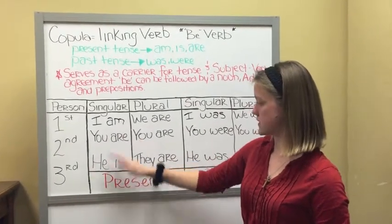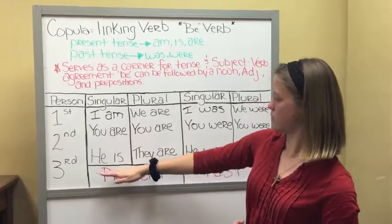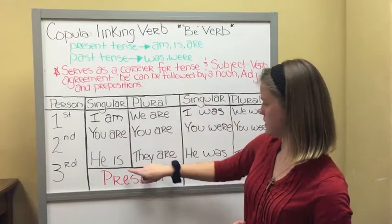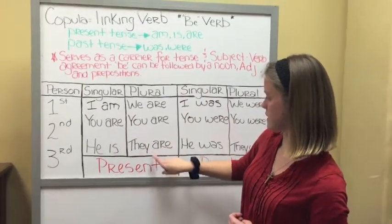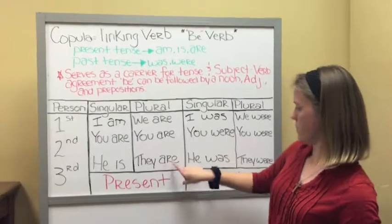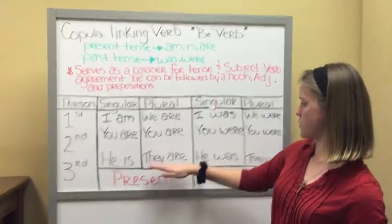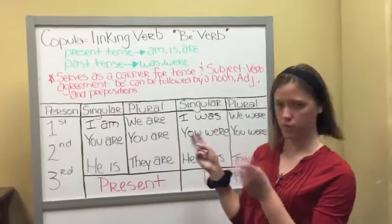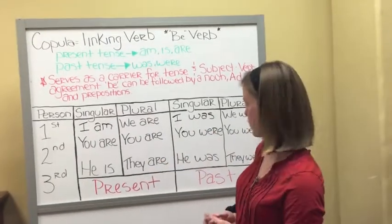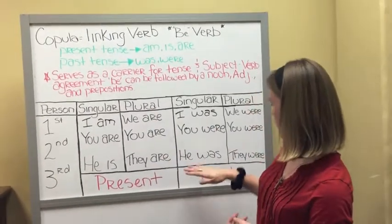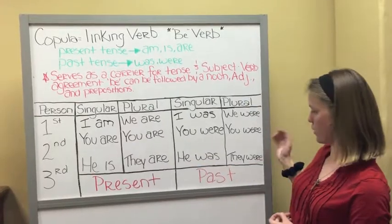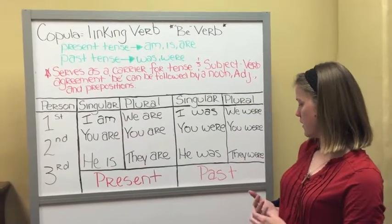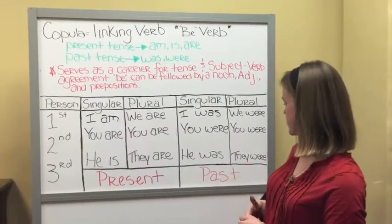For third person, you only use is, which is present tense, and then they are — so for plural, you would have the plural form for present tense. And then was and were for past.